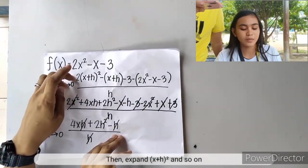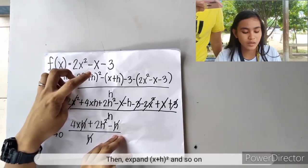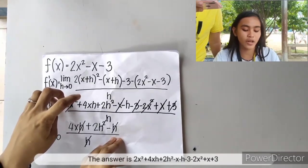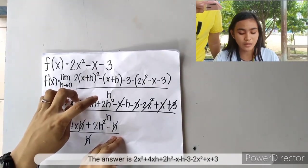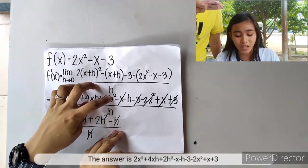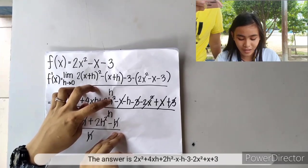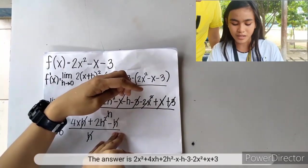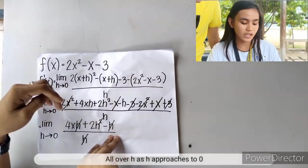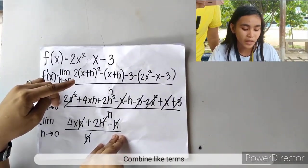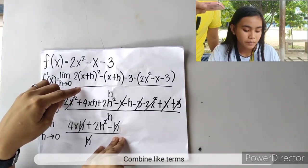Then expand (x+h) squared. The result is 2x squared plus 4xh plus 2h squared minus x minus h minus 3, minus 2x squared plus x plus 3, all over h as h approaches 0. Combine like terms.